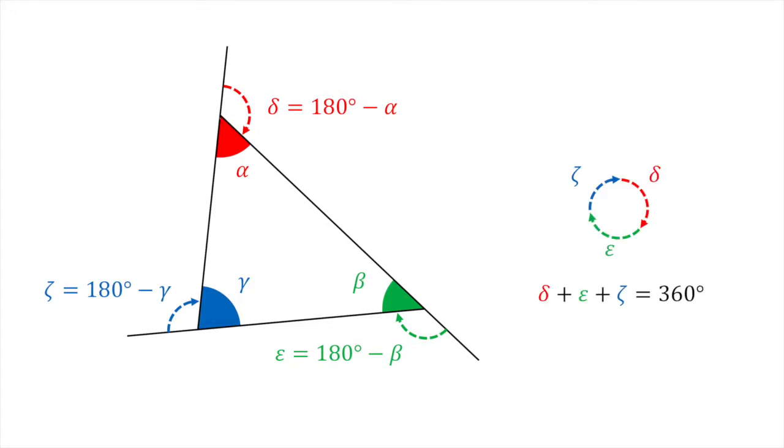Note that the external angles delta, epsilon, and zeta sum to 360 degrees or two pi radians. We will now prove using algebra that the three internal angles alpha, beta, and gamma sum to 180 degrees, which is also equal to pi radians.